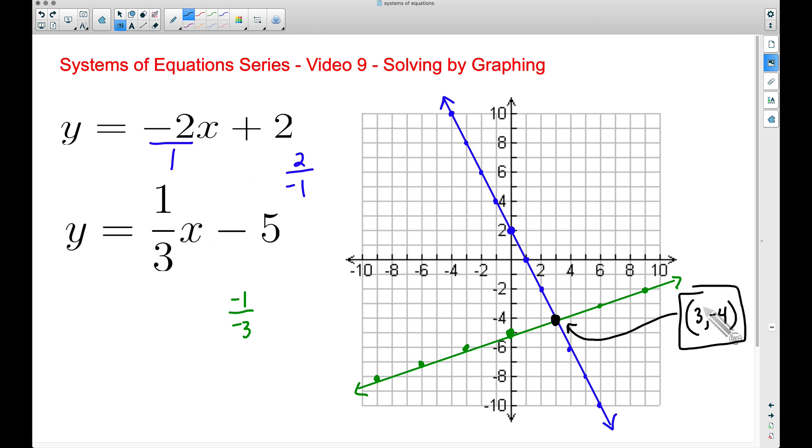And really what it boils down to is this. We're plugging 3 into x in both of these equations and we're getting the same y value of negative 4. As a matter of fact, 3 is the only number that we can plug into x in both of these equations and get the exact same y value for both of them.